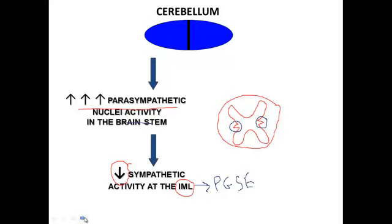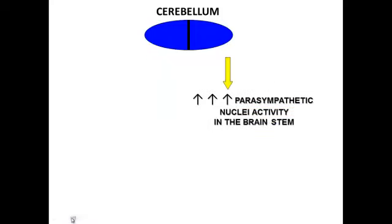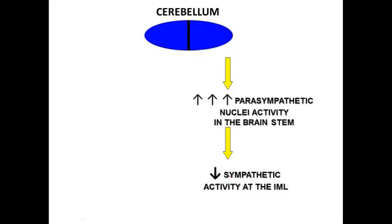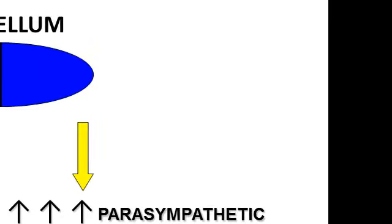So if I go a step further on this, if I know that the cerebellum is paired and this is the system on the left, there's got to be a system on the right. And let me get a pen color here back for you. A system on the right where the right side of the cerebellum fires down and increases parasympathetic activity in the brainstem. And as a result of that, will cause a breaking system to control the sympathetic activity at the IML on the right side of the person.